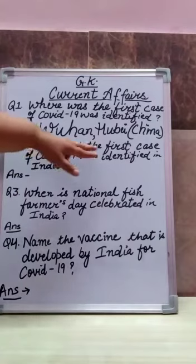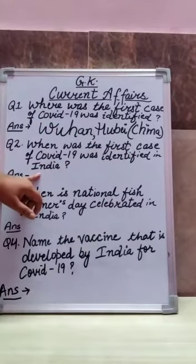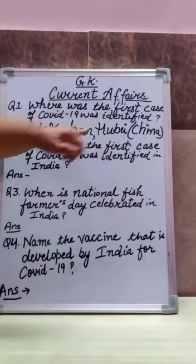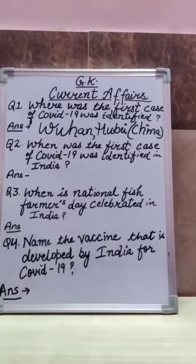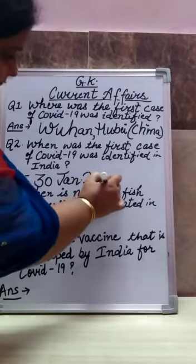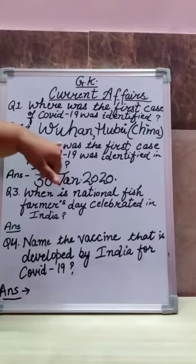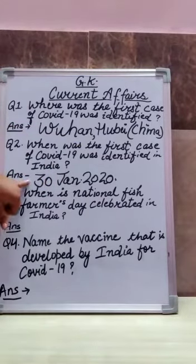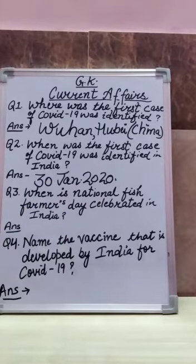Question number two: When was the first case of COVID-19 identified in India? Your answer is 30th January 2020.